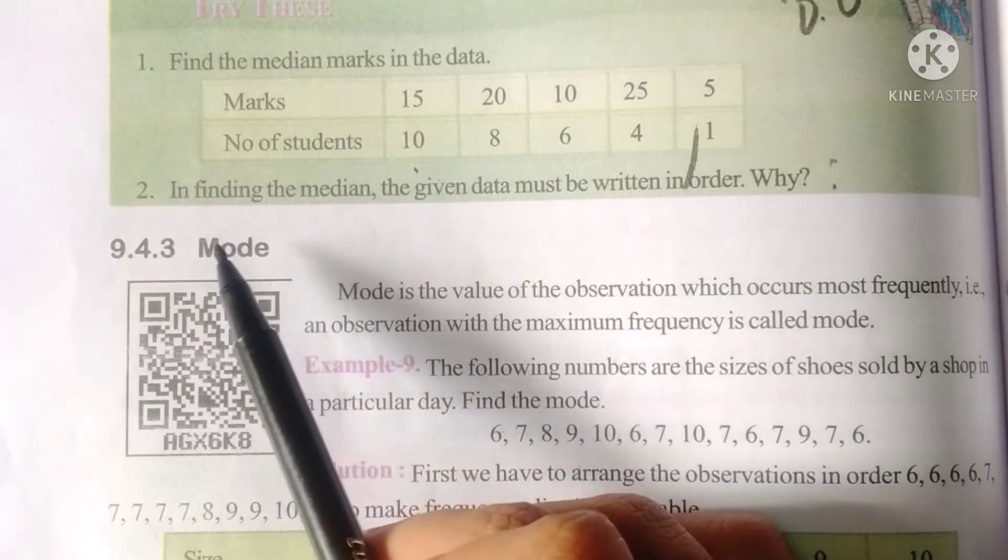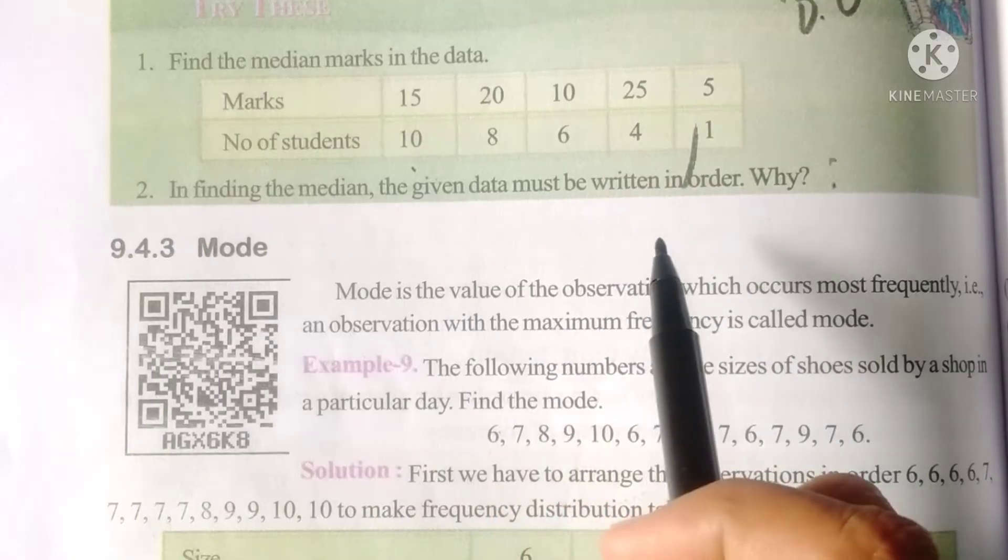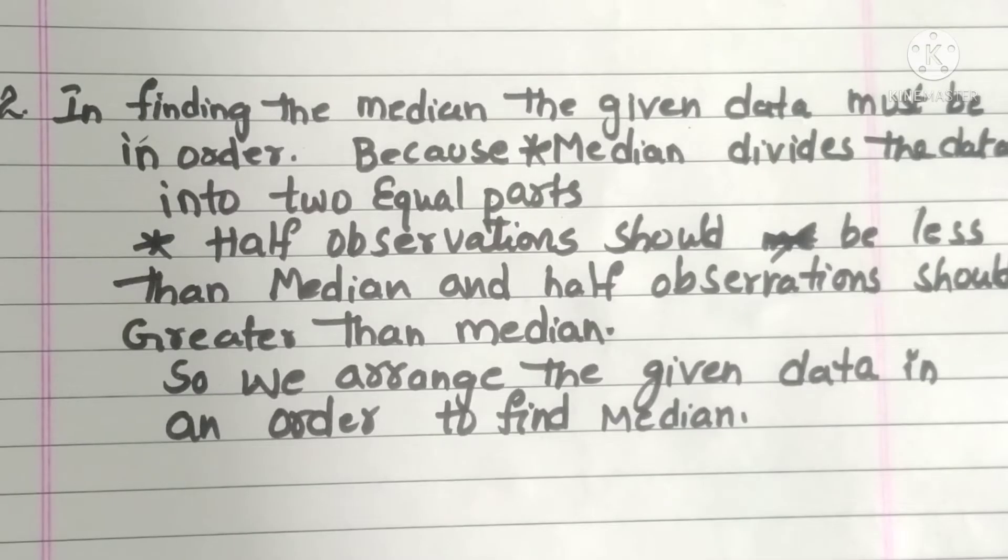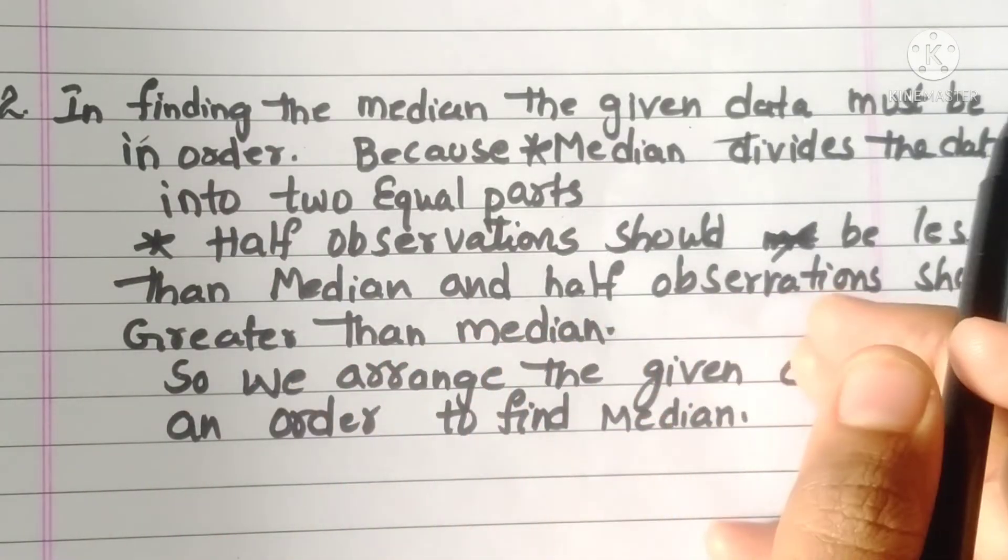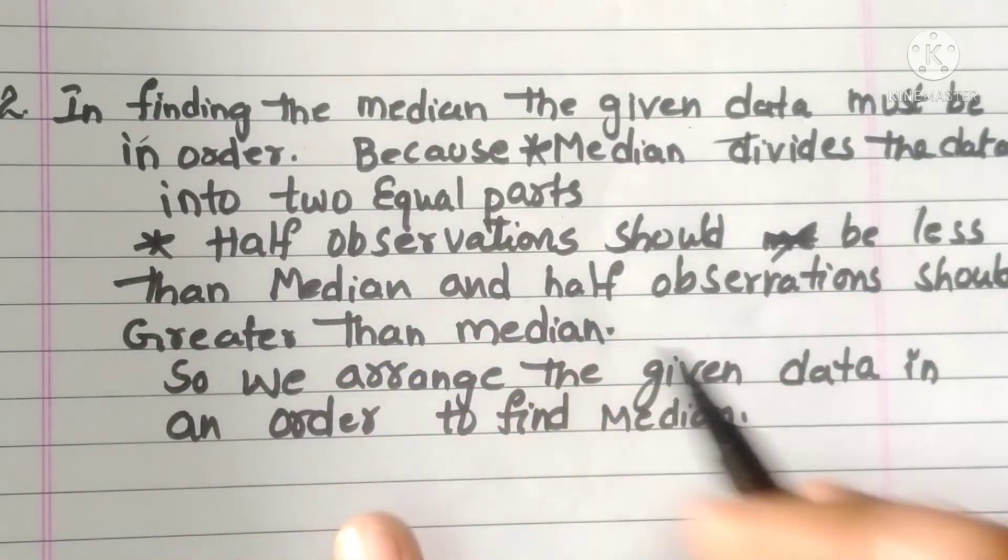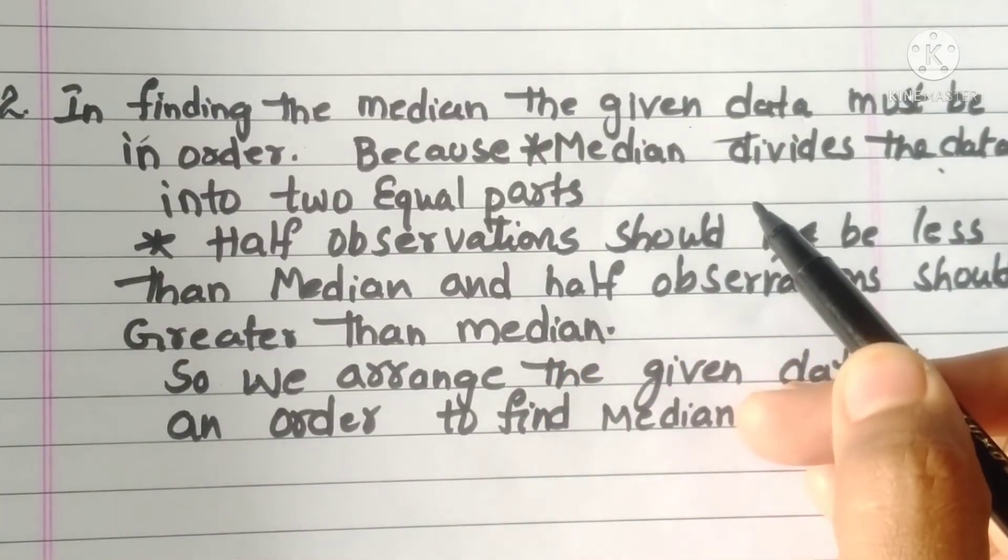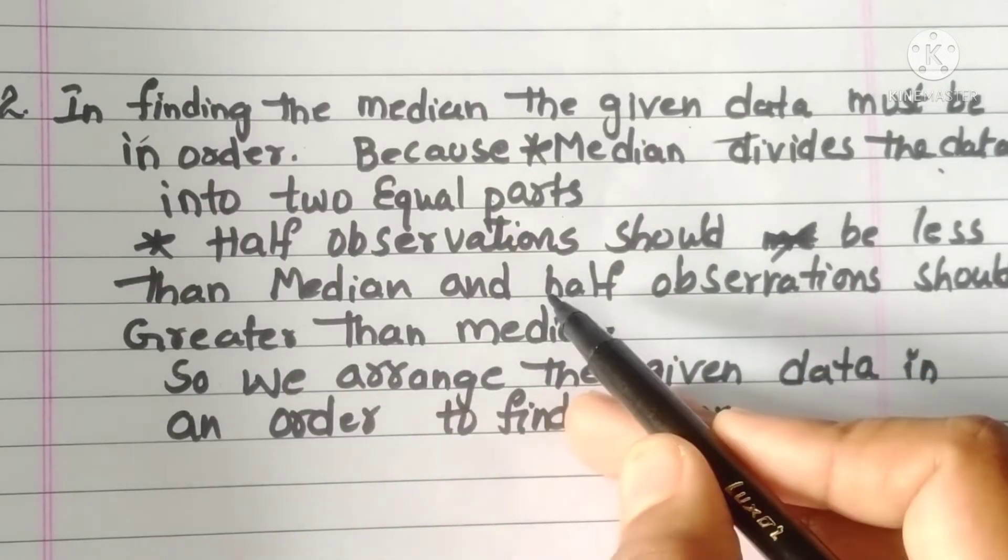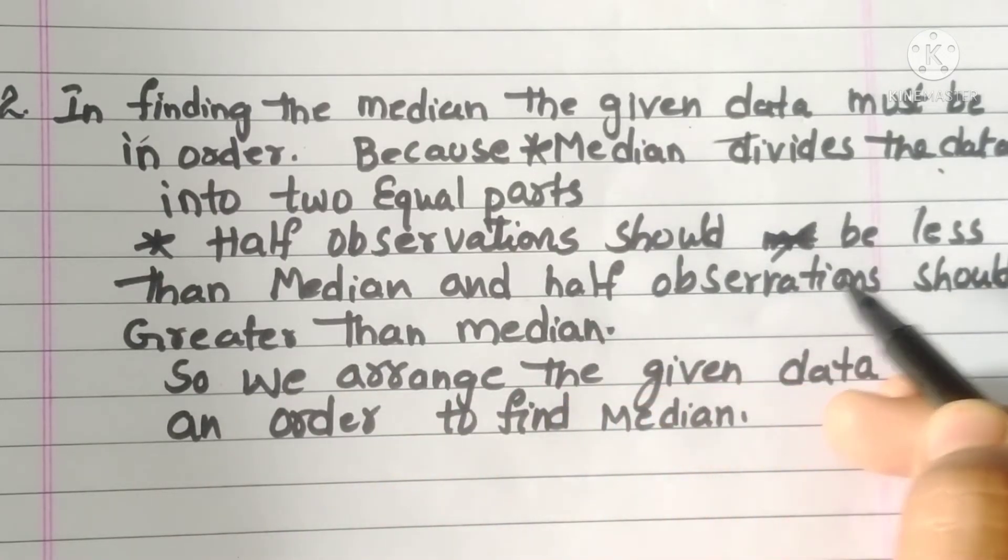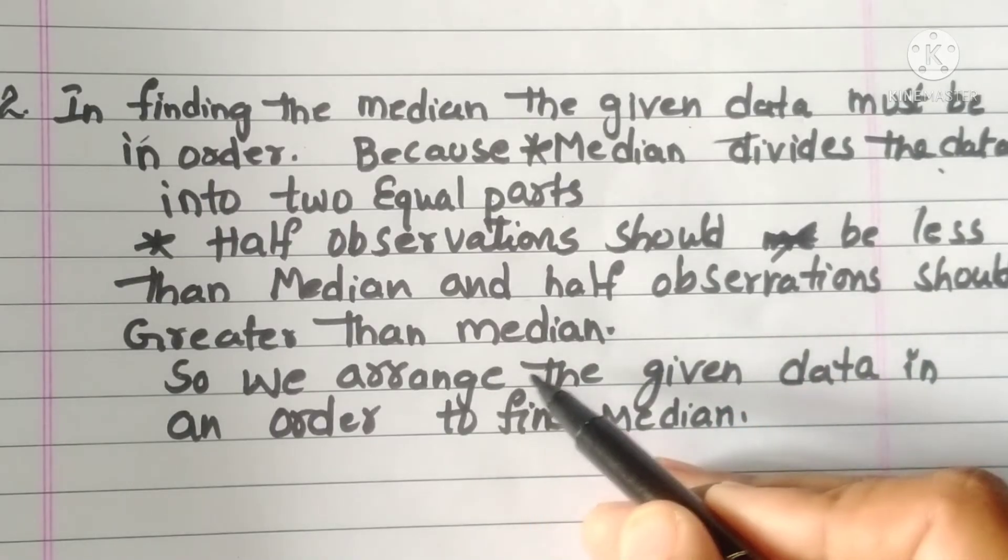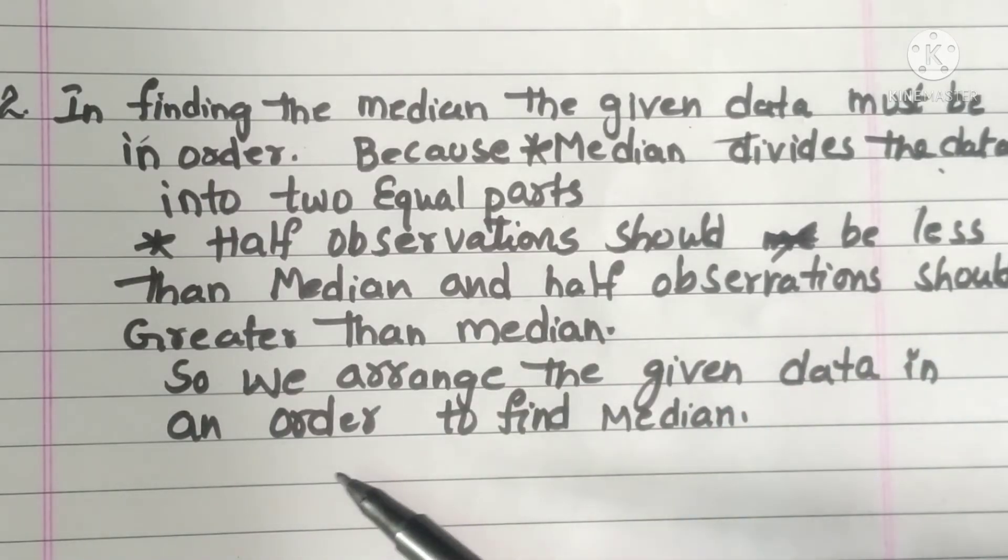Second question: In finding the median, the given data must be written in order. Why? Because median divides the data into two equal parts. Half observations should be less than the median and half observations should be greater than the median. So we arrange the given data in order to find the median.